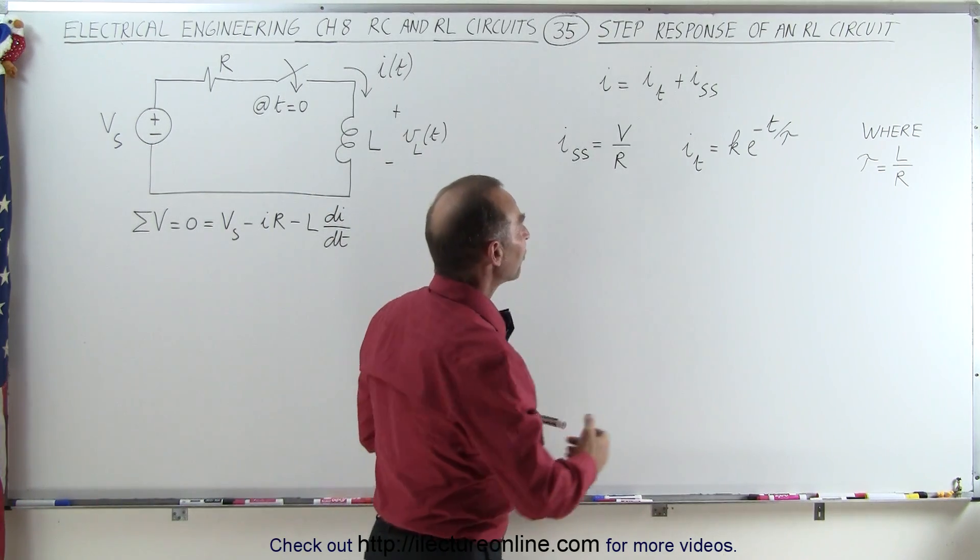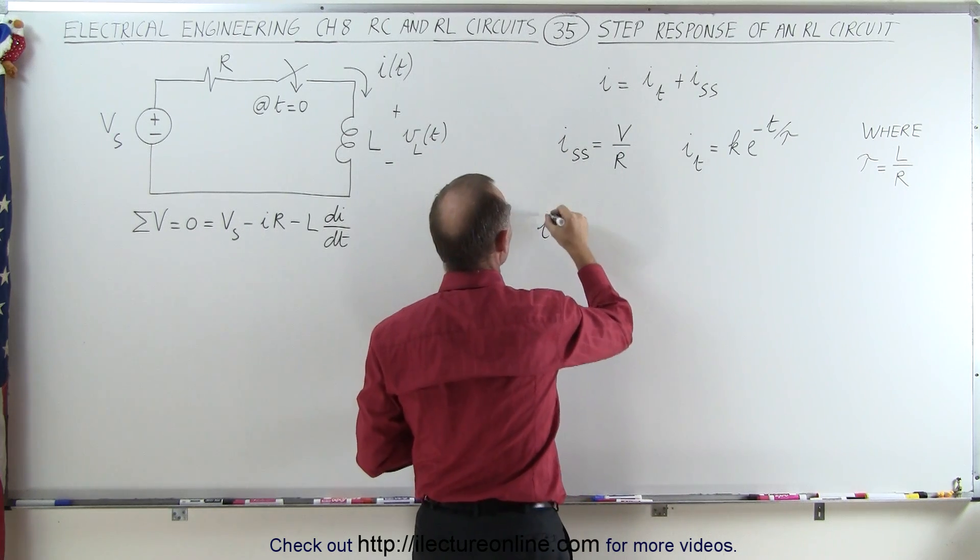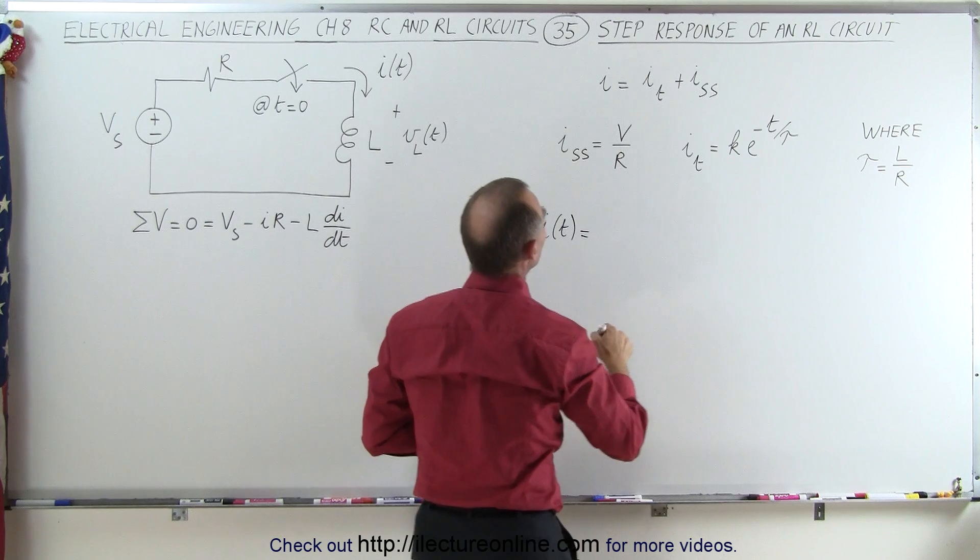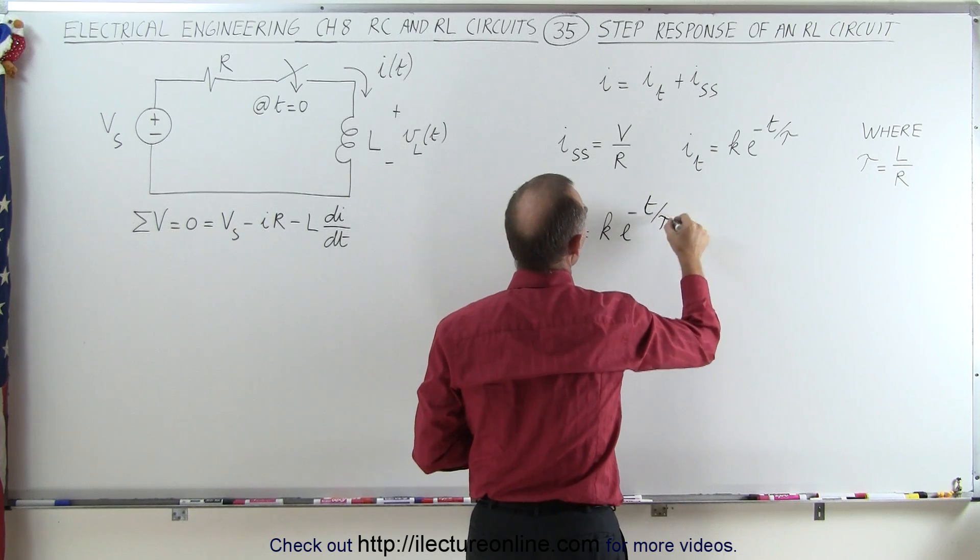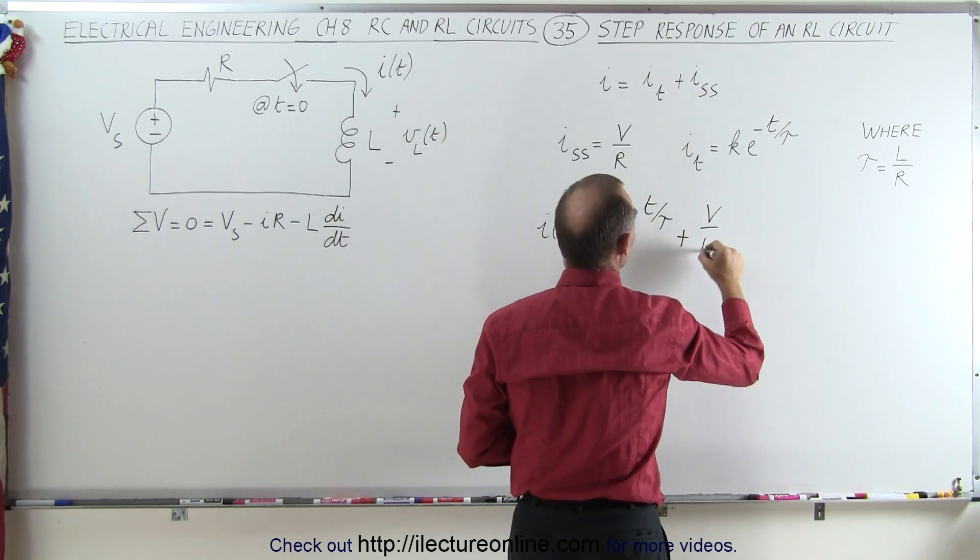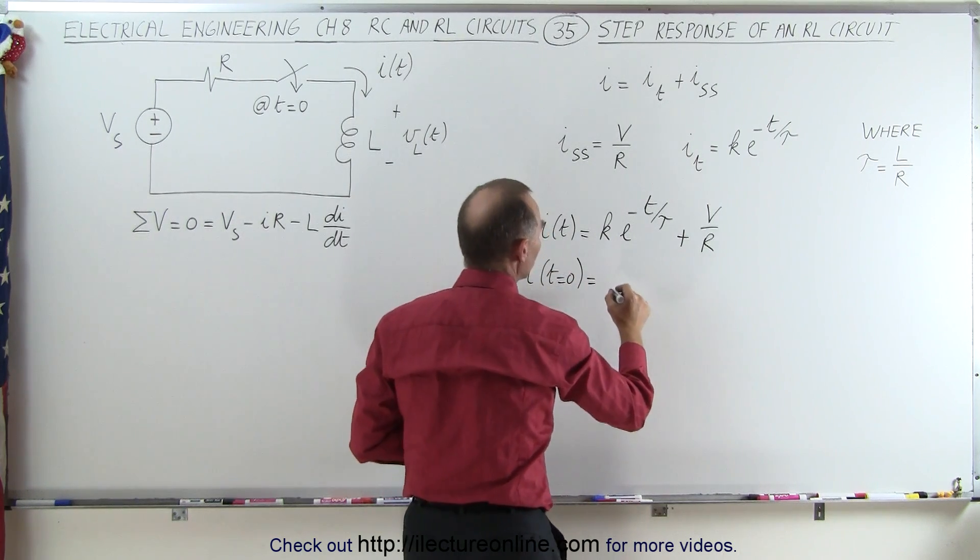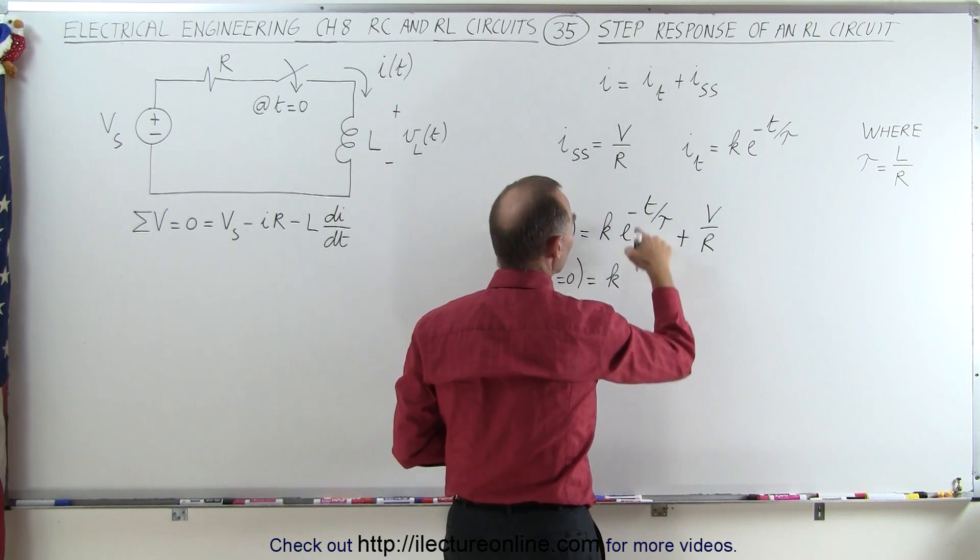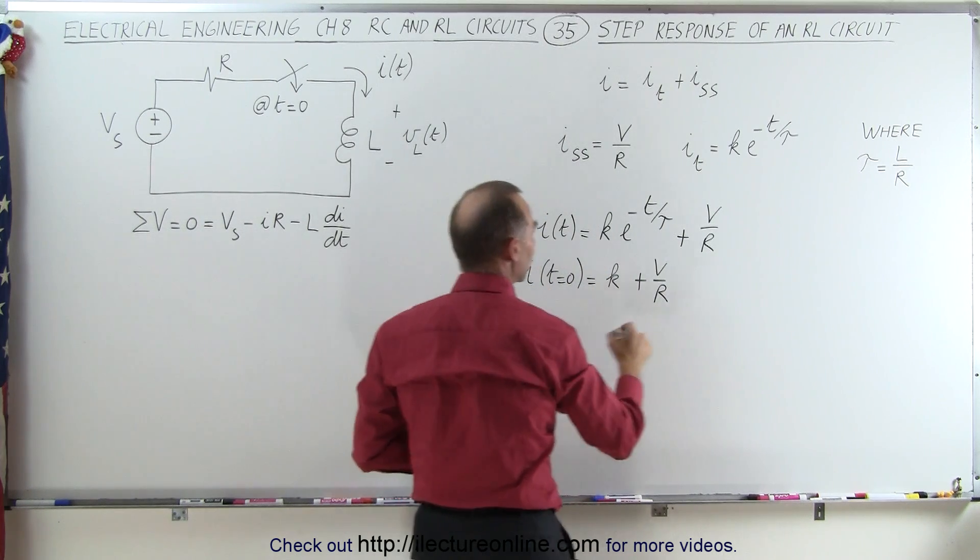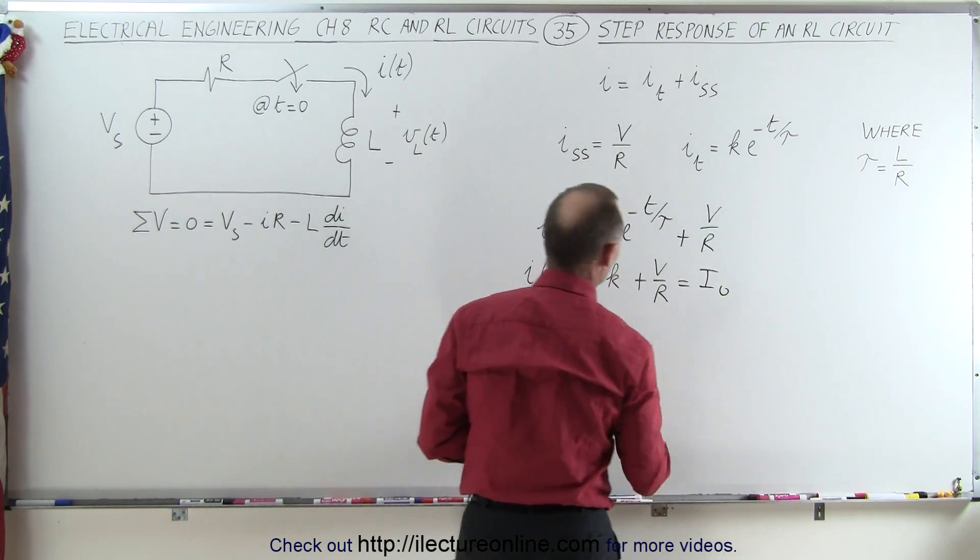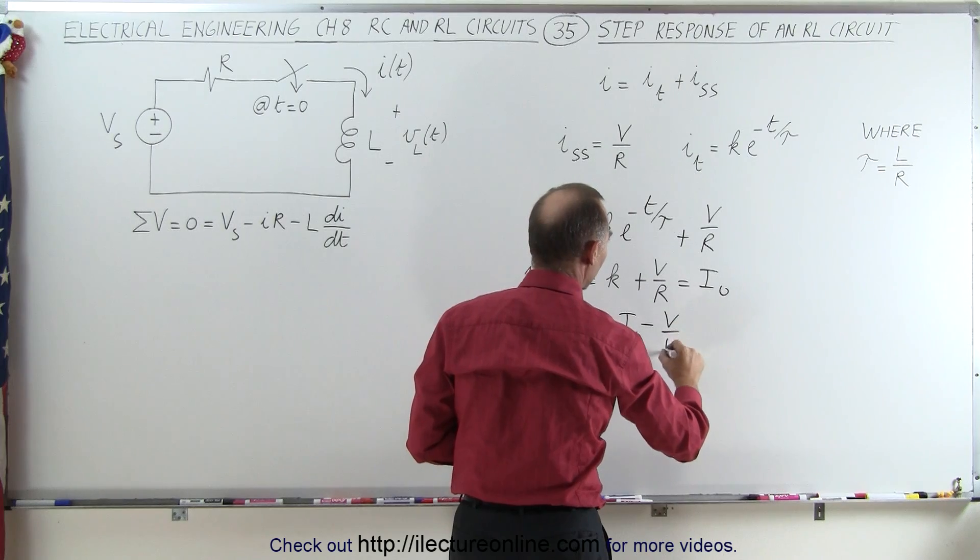So now let's go ahead and find the value for K so we can have the proper equation for the current. We can say that the current, as a function of time, is going to be equal to the transient, which is going to be K e to the minus t over tau, plus the steady state, which is V over R. Now let's find the current when time is equal to zero. That will be equal to K times e to the zero power, which is 1, plus V over R. And if we call this the initial current, we can say this is equal to I initial. In other words, K can then be described as the initial current minus V over R.